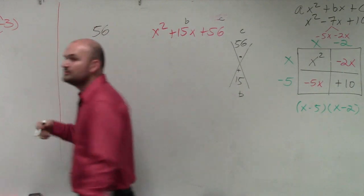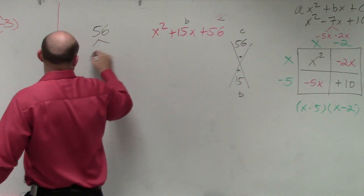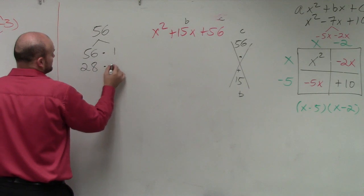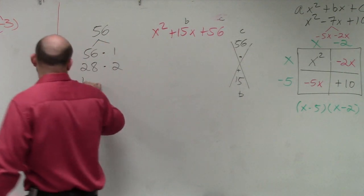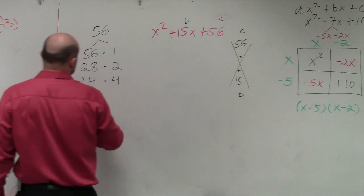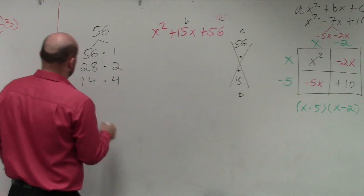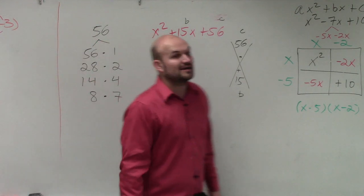Please do not ask me if you're having trouble until you write down all the factors. So 56: we have 56 times 1, 28 times 2, 14 times 4, and 8 times 7. Those are all the factors.